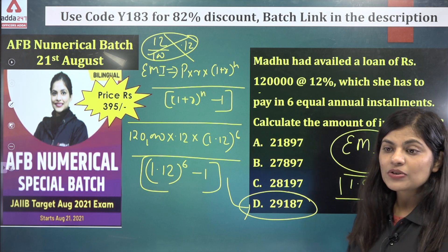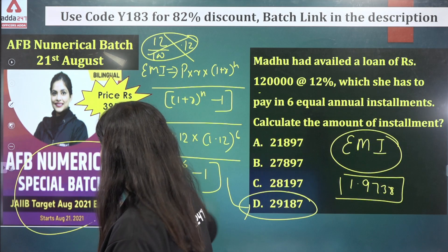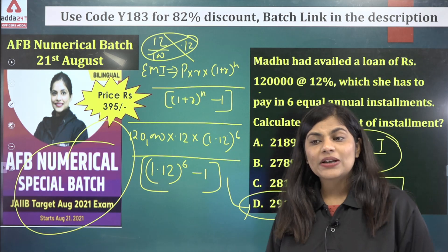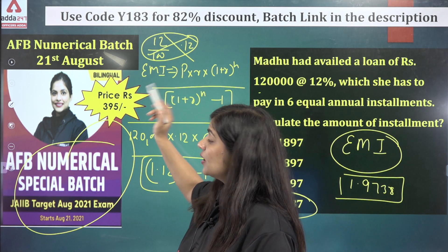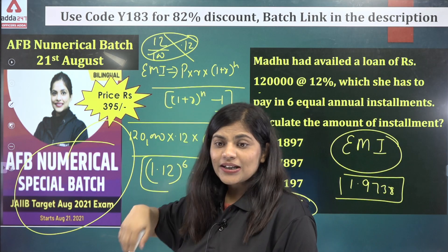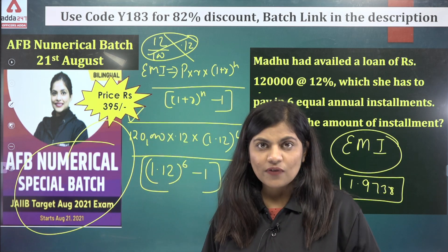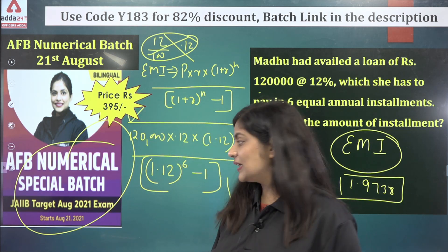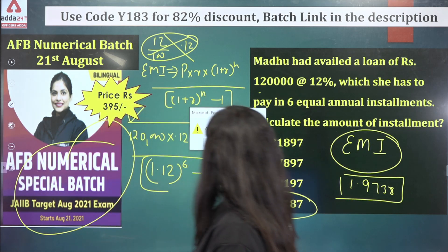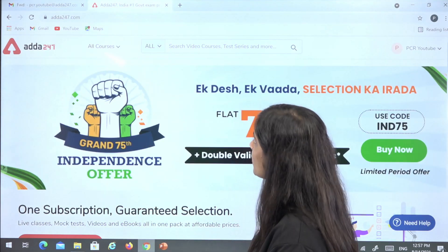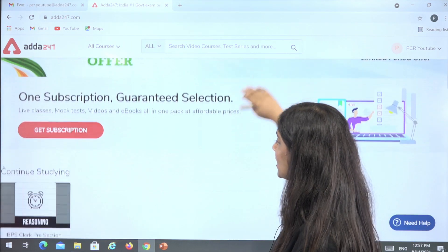To solve such questions, you can enroll in the numerical batch of AFM, which starts from August 21. Today there is a discount — 82% off, so you will get it for just ₹395. To avail this offer, you need to visit ADA247.com.